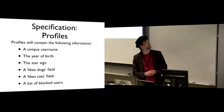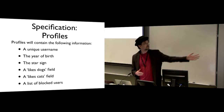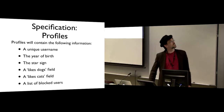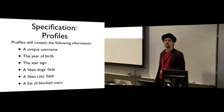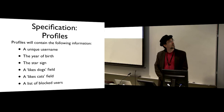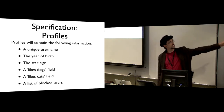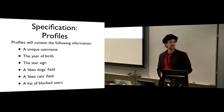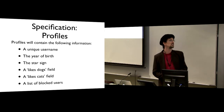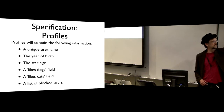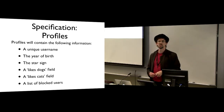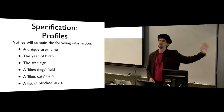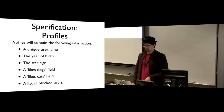Going to specification: we're going to have this specific set of data. The requirements said 'appropriate profile data' — this is the set of data we're interested in. We're going to have a unique username for each user, so we have some way of identifying a user just by name. We're going to keep track of their year of birth, their star sign, and two fields — one for whether they like dogs and one for whether they like cats — and those are just going to be true or false. We're also going to keep, for every profile, a list of who else is blocked. That's just going to be a simple list of names.